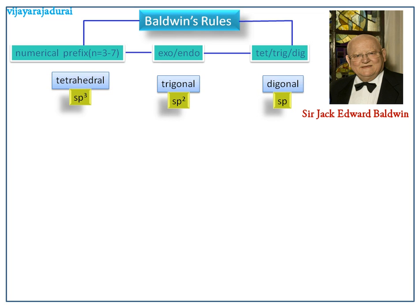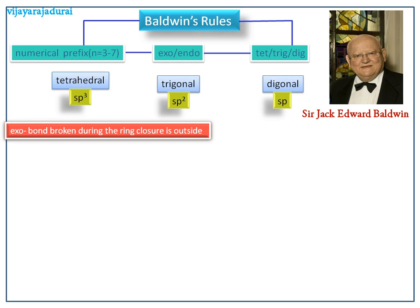Now we see N-numbered ring closing reactions. First we discuss the exo type — exo means the bond broken during the ring closure is outside. This is the general example for tetrahedral hybridization, where the nucleophile attacks the electrophilic carbon atom. We can see how the bond broken is outside during the ring closure. So this is called N-exo-tet ring closure.